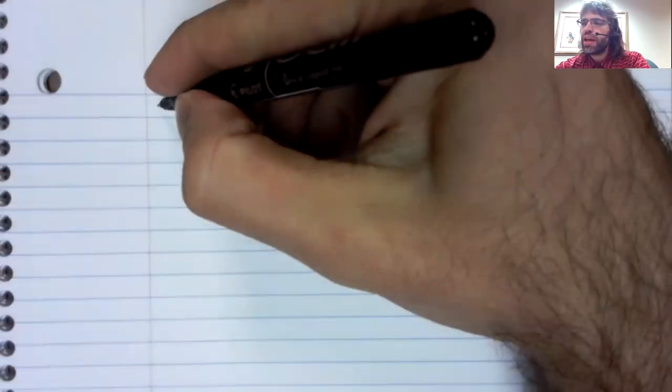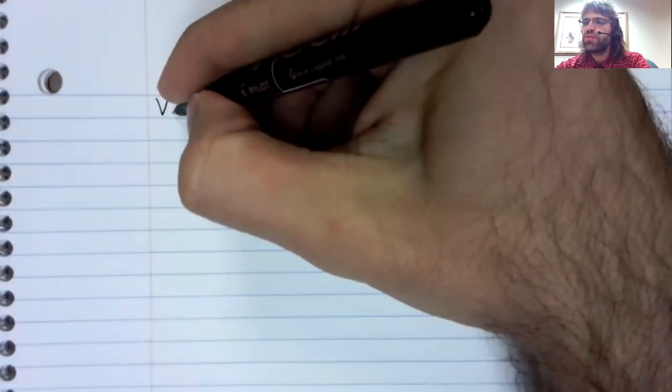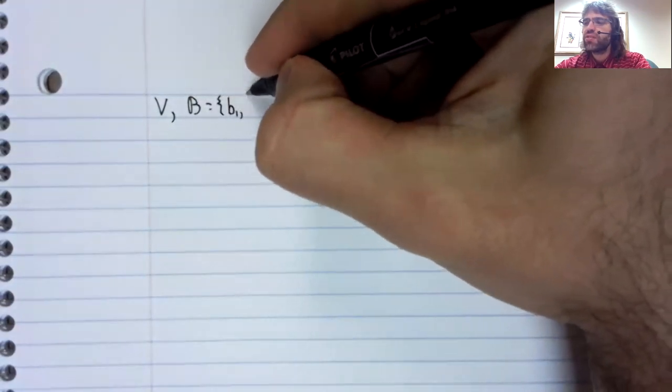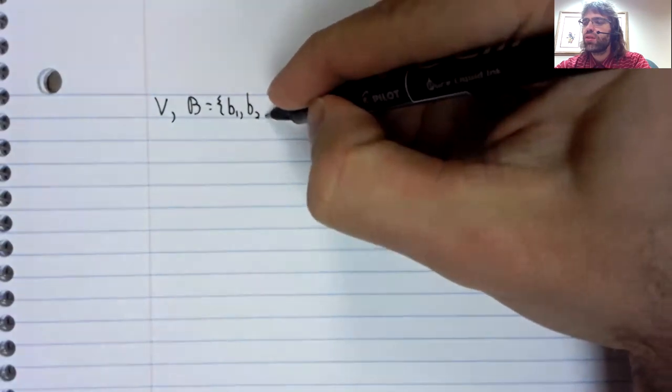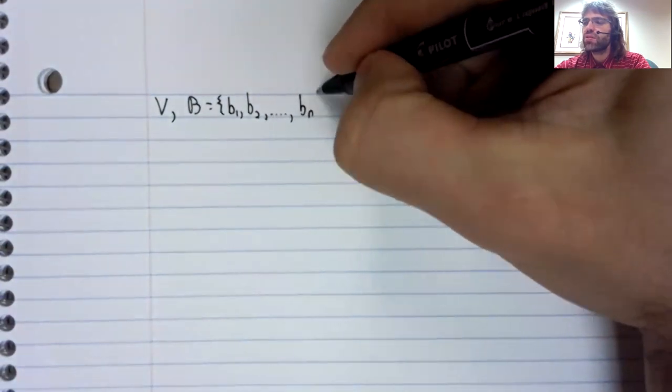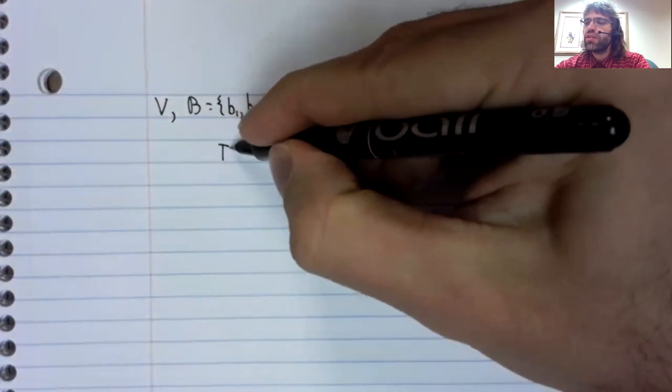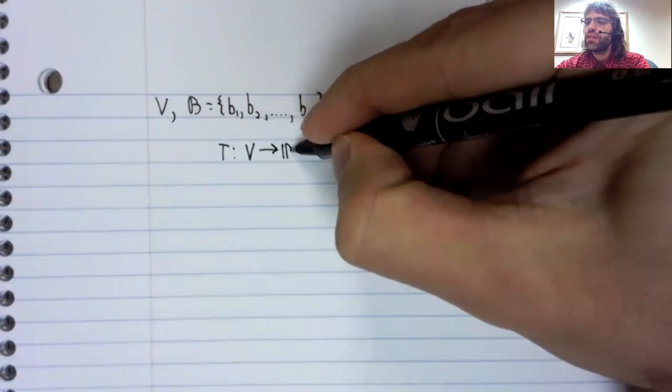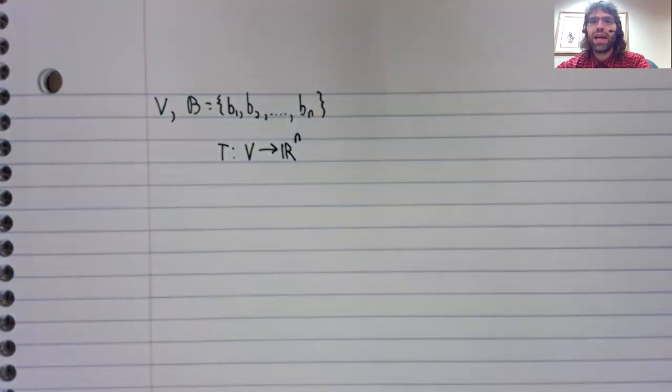Coordinate transformations are isomorphisms. What I mean by that is that if we have a vector space V and some basis of the vector space, there is a transformation from V to R^n.